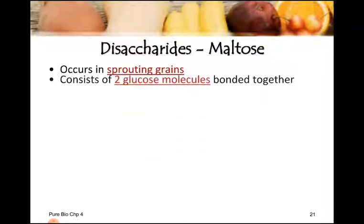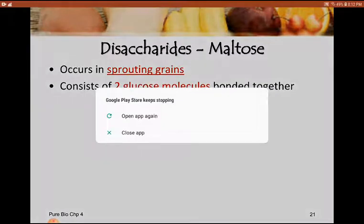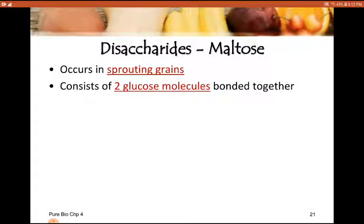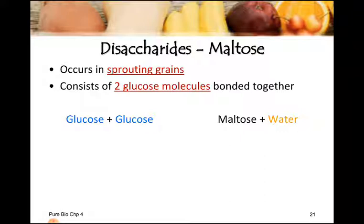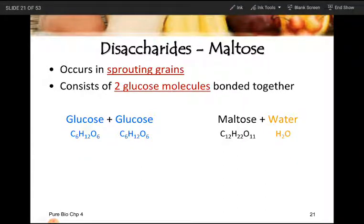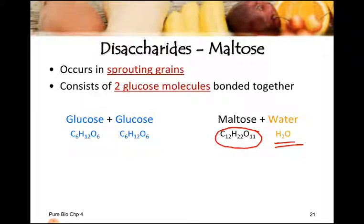The maltose molecule consists of two glucose molecules bonded together. Two glucose molecules combine to form a bigger size molecule — that is maltose. So glucose plus glucose gives maltose plus water. The formula of glucose is C6H12O6, so two C6H12O6 when combined give C12H22O11, which is maltose, and a water molecule is released.